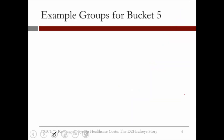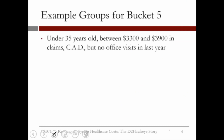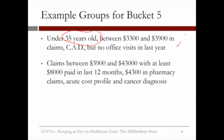Let us give some examples of bucket five. One example: the patient is under 35 years old, has between $3,300 and $3,900 in claims, coronary artery disease as a diagnosis, but no office visit in the last year. Another example: claims between $3,900 and $43,000 with at least $8,000 paid in the last 12 months, $4,300 in pharmacy claims, an acute cost profile, and a cancer diagnosis.